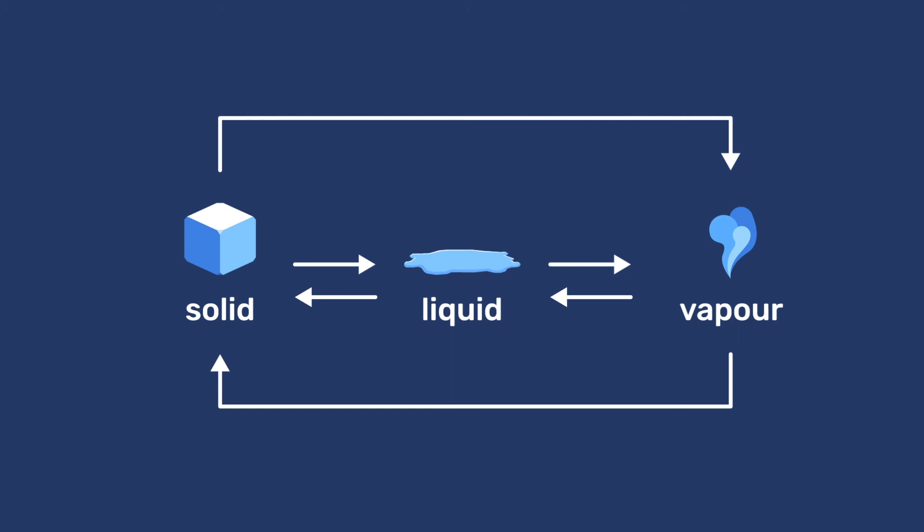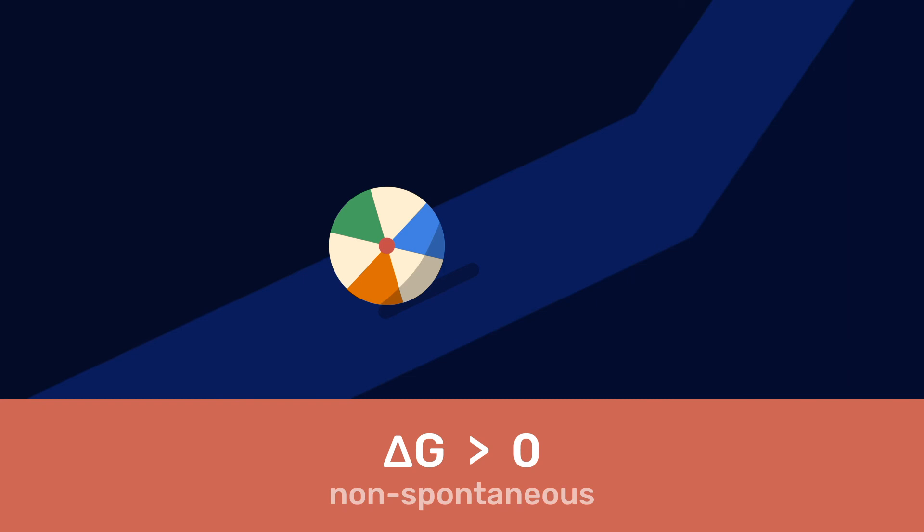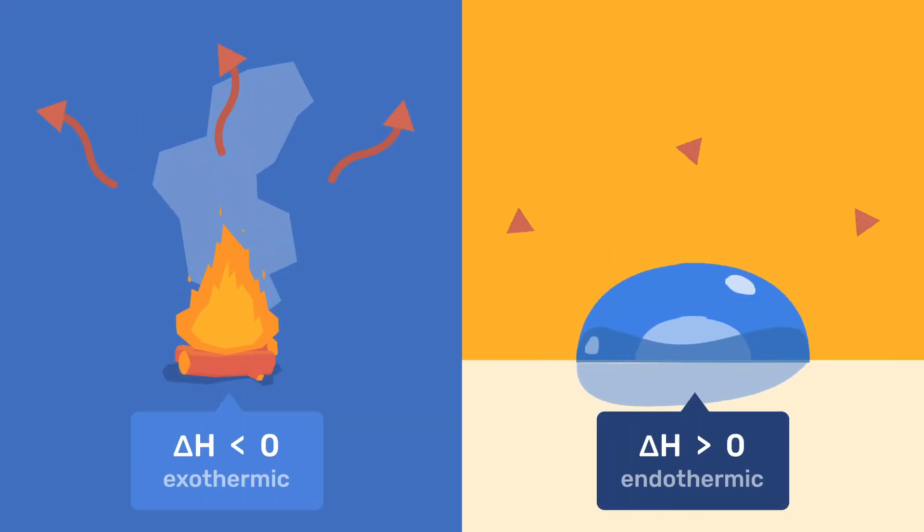In summary, phase changes are useful to understand the differences between spontaneous and non-spontaneous reactions, as well as to distinguish these from exothermic and endothermic reactions.